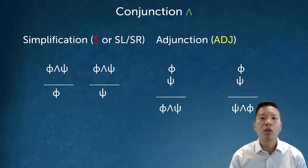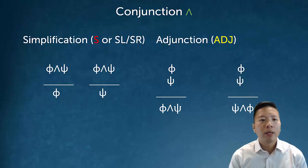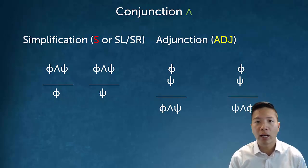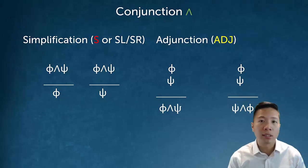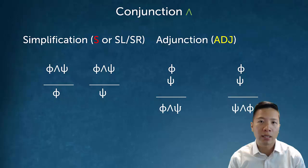Our first two new rules are simplification and adjunction — the rules for the conjunction, or the and symbol. Simplification is an elimination rule: if I have phi and psi, and I know that is true, then I can infer either one side or the other. So if I know phi and psi, I can just conclude phi, or I can conclude psi. That's an example of eliminating and as the main connective to get at its parts.